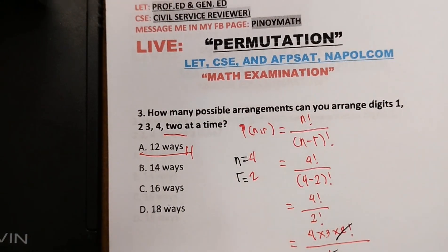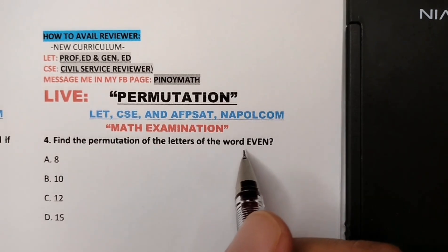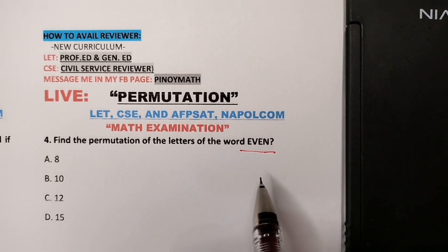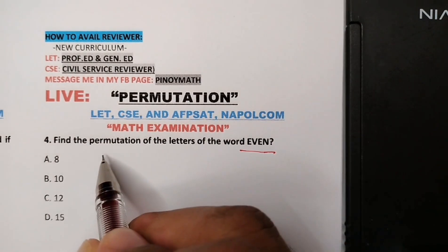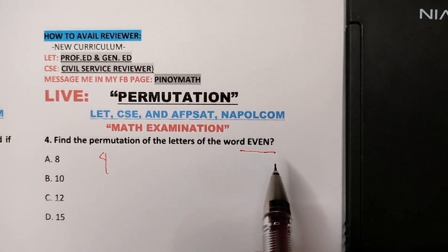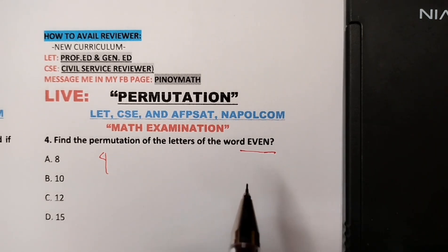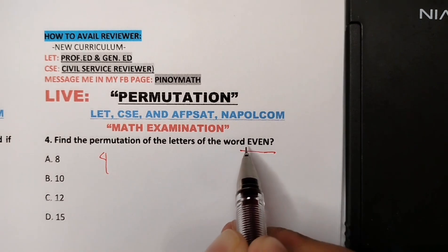Now number 4: find the permutations of the letters of the word 'EVEN.' If you notice, no numbers are involved — it's a word. The word EVEN has 4 letters: E, V, E, N. When dealing with words, count the letters then look for repeated ones. The repeated letter here is E — there are two E's. So N = 4 and P = 2 (representing the two identical E's).